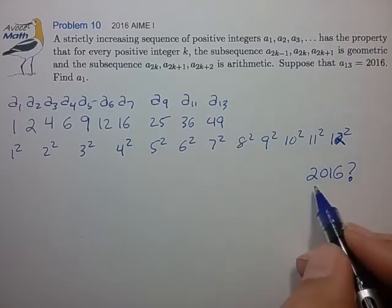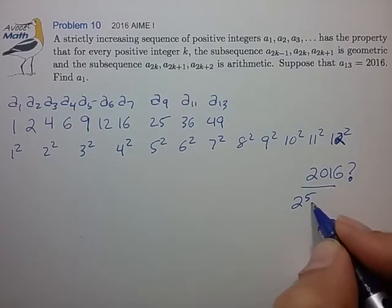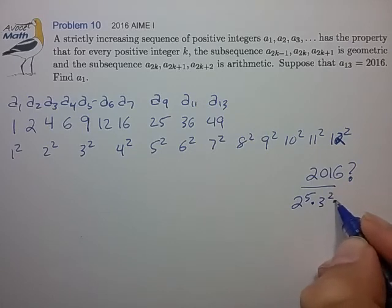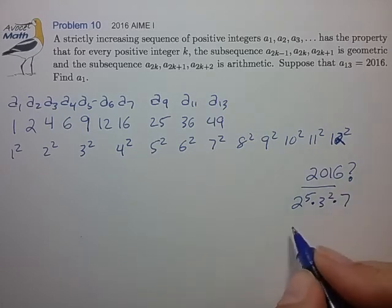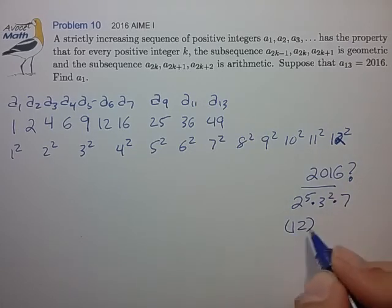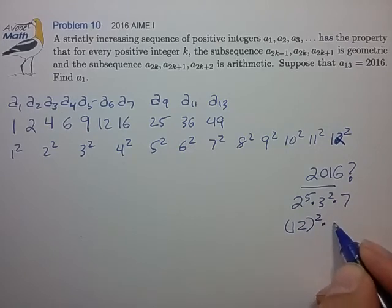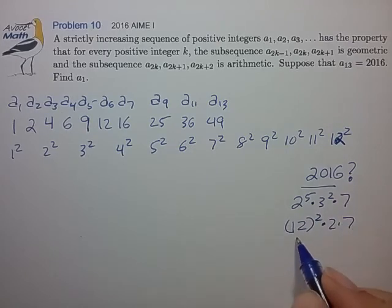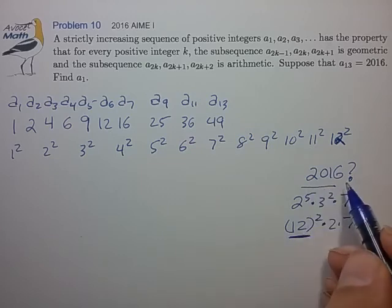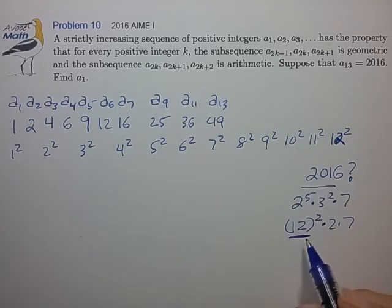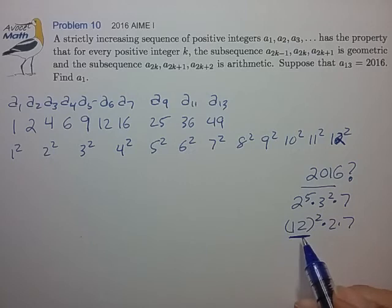And we remember that 2016 has the prime factorization shown, and so we can quickly find that 2016 is equal to 12 squared times 2 times 7. So there's a fairly large square inside of 2016 which really suggests that we can actually get to the value of 2016 by taking this